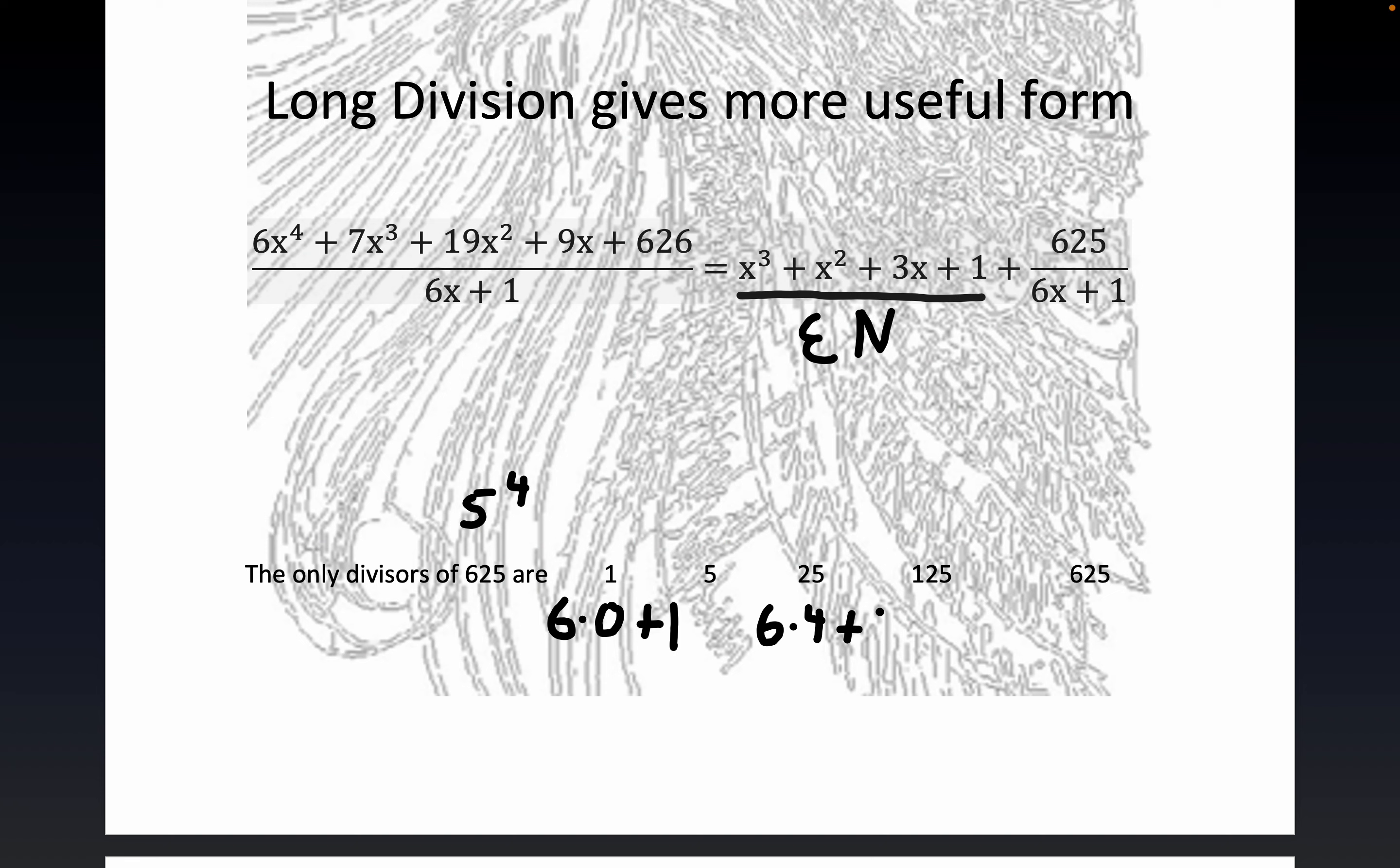And also, 6 times something is never equal to 125. That is, 125 is not divisible by 6. It almost is. If it was 126, it would be. Now, right here, the last one is 6 times 104. So 6 times 104 plus 1 is equal to 625.